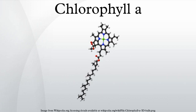Chlorophyll A is a specific form of chlorophyll used in oxygenic photosynthesis. It absorbs most energy from wavelengths of violet-blue and orange-red light. It also reflects green-yellow light, and as such contributes to the observed green color of most plants.